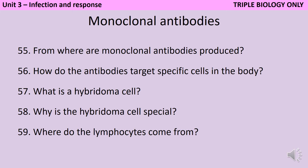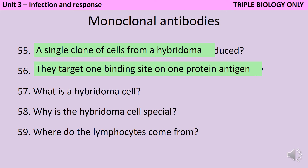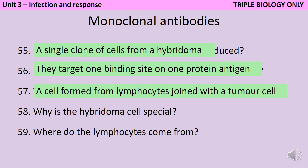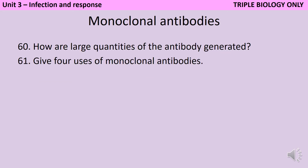Monoclonal antibodies are produced from a single clone of cells from a hybridoma. The antibodies are able to target specific cells because they target one binding site on one protein antigen — a bit like the lock and key theory for enzymes. A hybridoma cell is made from lymphocytes joined together with a tumour cell, meaning it can rapidly divide and also make the antibody. Those lymphocytes come from a mouse. Large quantities of the antibody are generated by cloning the hybridoma cell so that there are many identical cells all making the same monoclonal antibodies.